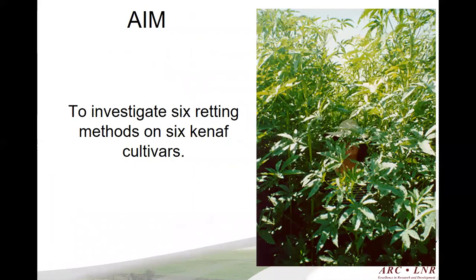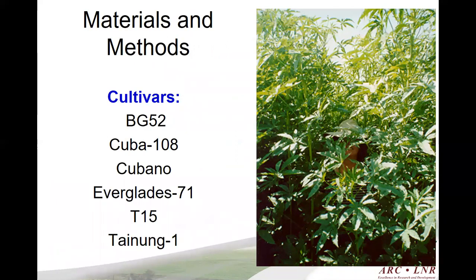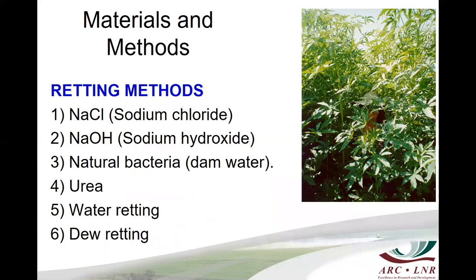The aim of this investigation was to evaluate six retting methods on six Kenaf cultivars. The cultivars included BG-52, Cuba-108, Cubano, Everglade-71, T-15 and Tynan-1. The retting methods included sodium hydroxide, sodium chloride, natural bacteria or dam water, a urea mixture, water retting and dew retting.